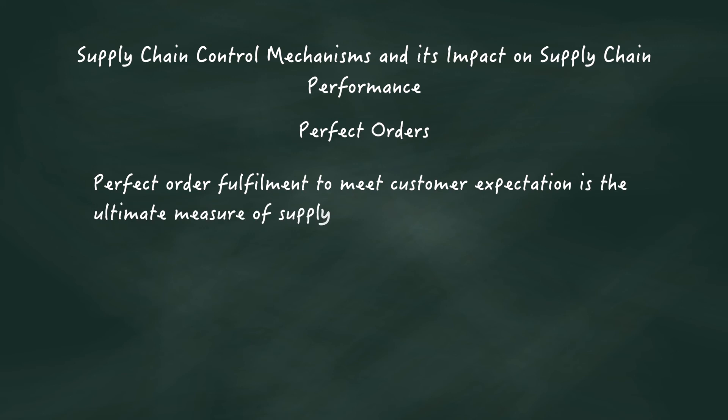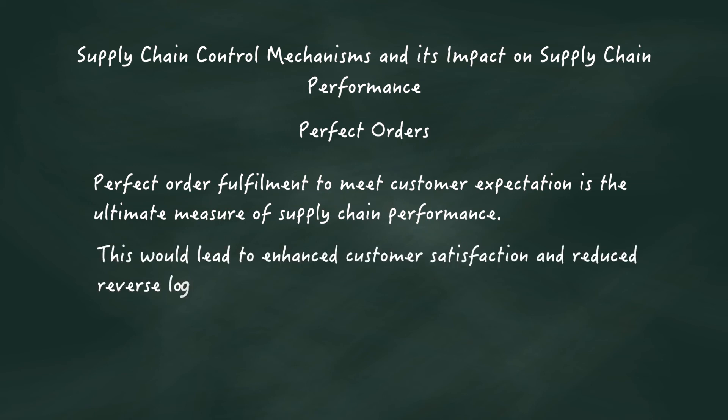Perfect order fulfillment to meet customer expectations is the ultimate measure of supply chain performance. This leads to enhanced customer satisfaction and reduces reverse logistics issues.